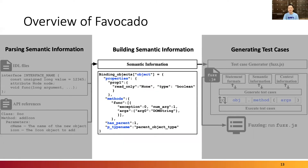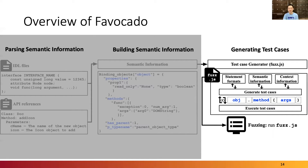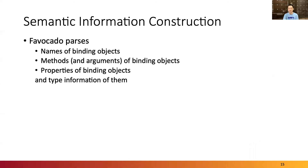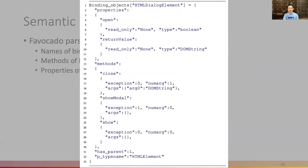First, Favocado takes interface definition language files or API references as input to parse the semantic information of the binding code. Next, it constructs semantic information of targeted binding code to generate valid JavaScript statements. Lastly, it starts fuzzing binding code on a target system by using syntactically and semantically correct test cases. Specifically, Favocado parses names, methods, and properties of binding objects with their type information. This extracted semantic information is directly used to generate test cases while fuzzing.